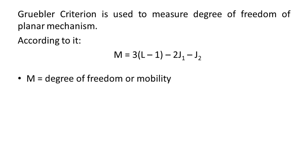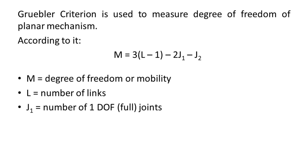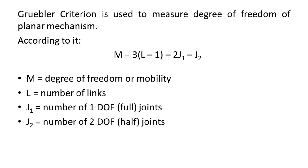Where M is the degree of freedom or mobility of the planar mechanism, L is the number of links in the planar mechanism, J1 is the number of joints having one degree of freedom, and J2 is the number of joints having two degrees of freedom.